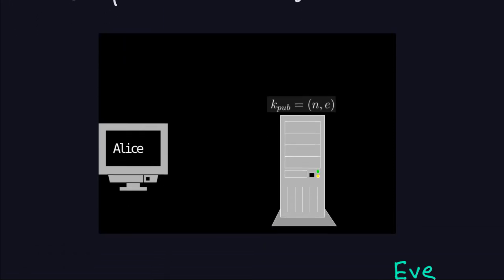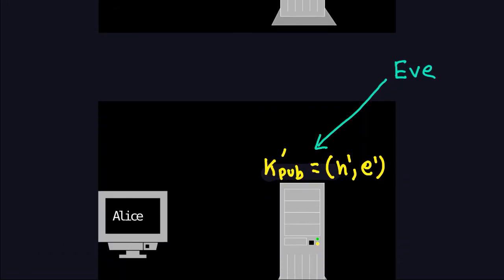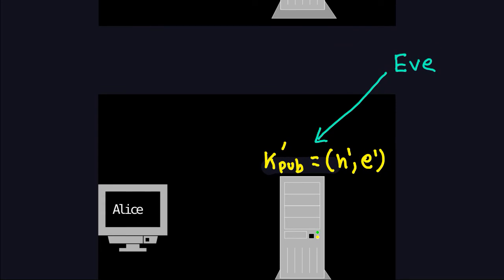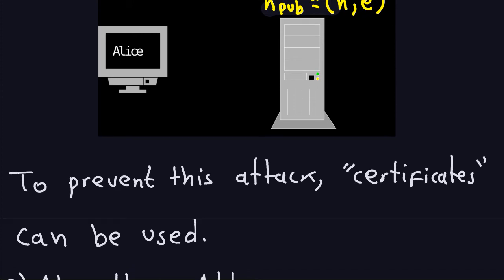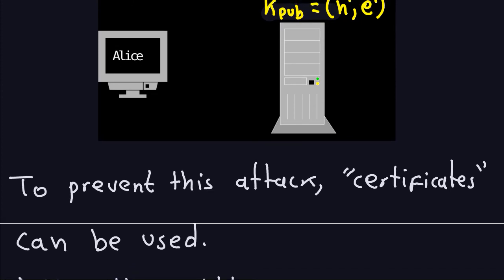The last thing we saw was this picture showing that attacker Eve is able to replace the public parameters — the original N and E done by Bob — so Alice will believe that Eve is the one signing the messages. This attack could be prevented if you use certificates, which is something we haven't seen yet but is an important feature of cryptography.